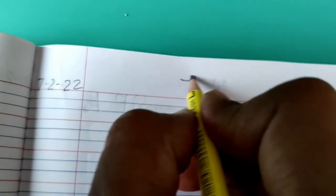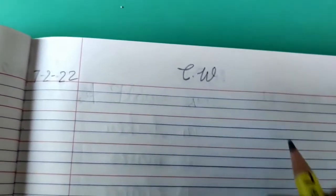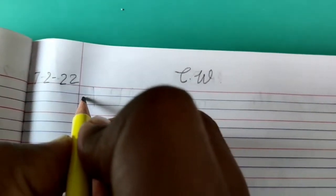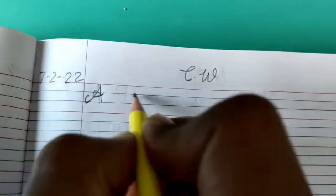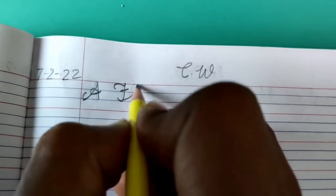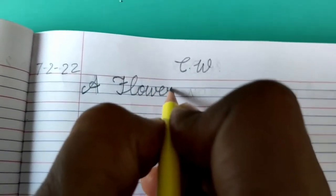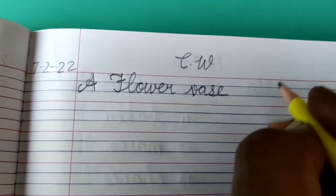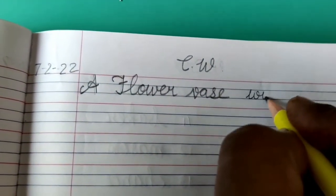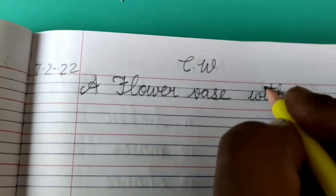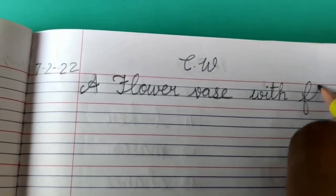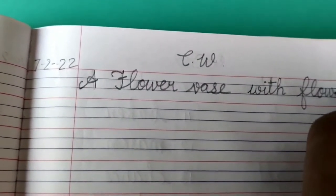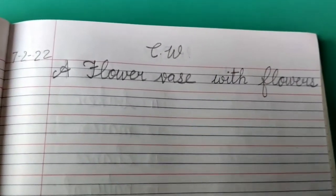Write down today's date 7-2-22. At the top write down classwork capital C dot capital W. Now write down heading capital A capital F-L-O-W-E-R flower V-A-S-E vase W-I-T-H with F-L-O-W-E-R-S flowers. A flower vase with flowers.